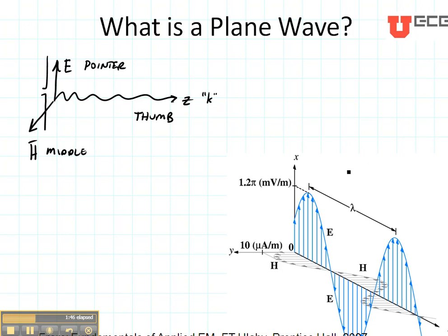So right here is a picture from your book that shows you the wave propagating in the Z direction as shown. The electric field that is polarized in the X direction and the magnetic field that is polarized in the Y direction.